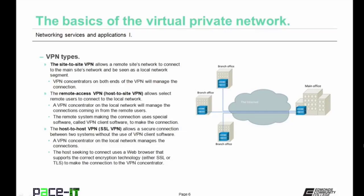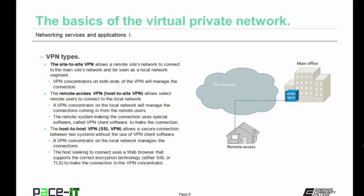There is the site-to-site VPN, which allows a remote site's network to connect to the main site's network and be seen as a local network segment. VPN concentrators on both ends of the VPN will manage that connection. Then there's the remote access VPN, also called a host-to-site VPN, which allows select remote users to connect to the local network. A VPN concentrator on the local network manages incoming connections, and the remote system uses special VPN client software to make that connection.